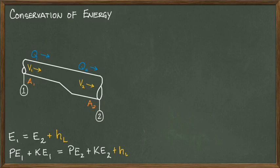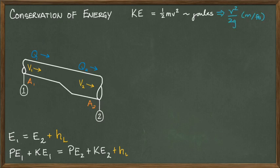Kinetic energy is often introduced as one-half mass times velocity squared. Accounting for the properties of the fluid, we can convert this computation into length units using velocity squared over 2g. There is a really good reason to convert energy into a unit of length that I'll explain later.